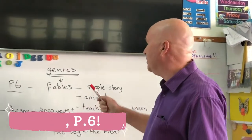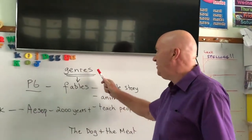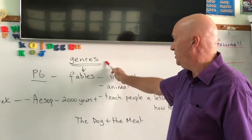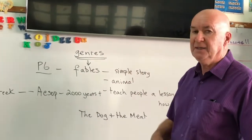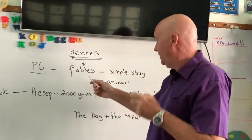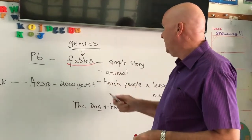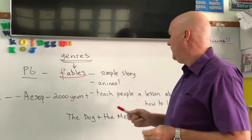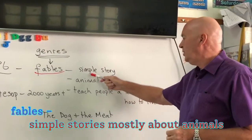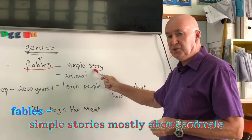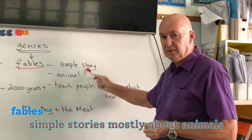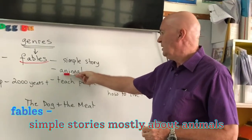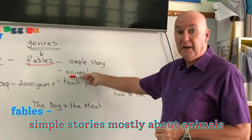P6, we'll be looking at books — different types or different genres of books — and today let's have a look at books that contain what we call fables. Fables are really simple stories, and mostly, fables usually are about animals.